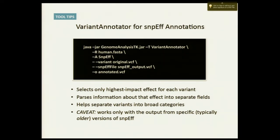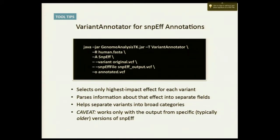You use this SnpEff annotation — dash-use-SnpEff — your original VCF, the SnpEff file, and you output a nice clean file. What it does is select only the highest impact effect for each variant. So if you have lots of synonymous mutations and then one non-synonymous mutation, it'll choose that one and put all the details into the record for just that one event, along with the transcript ID and a rating system — like how bad is it? Super bad? Really bad? A little bit bad? — which helps you separate things into broader categories so you're not lost in all the data.